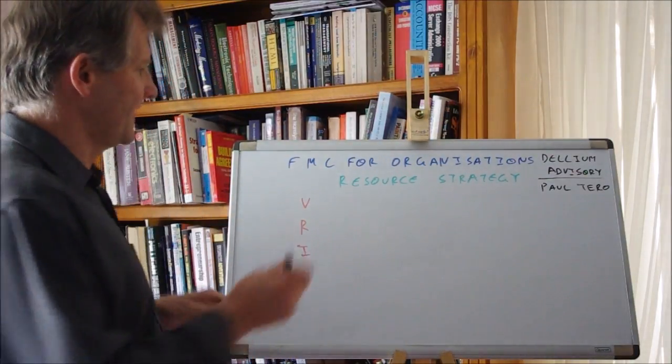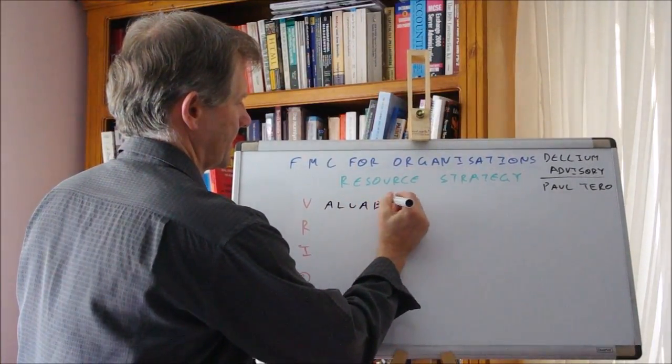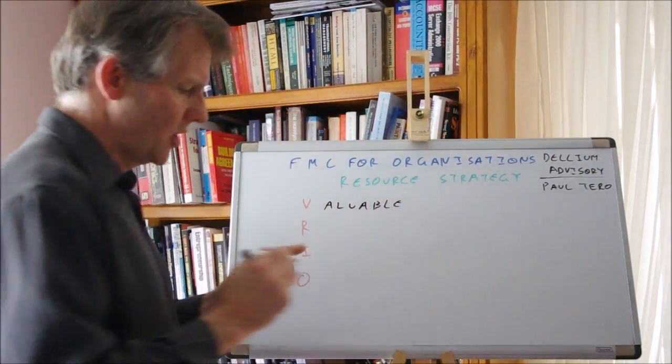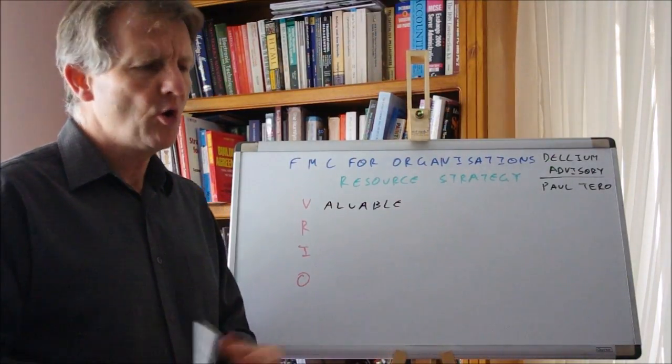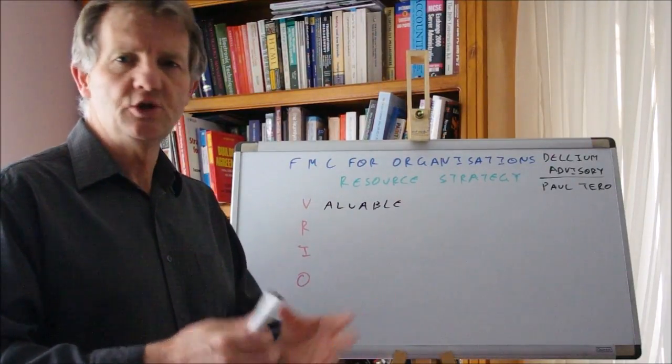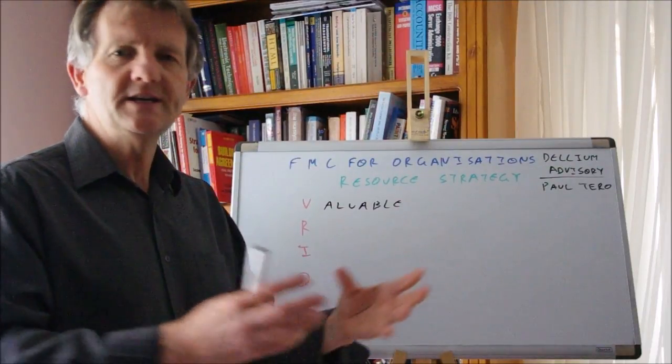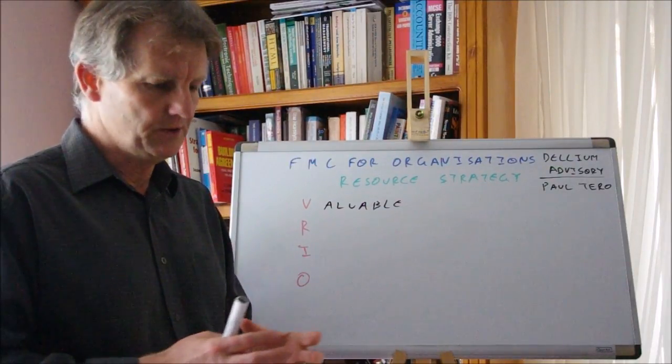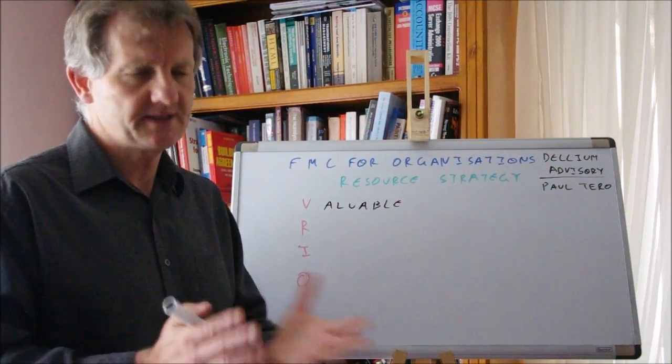V stands for valuable. What resource, what capability, what capacity do you have which is valuable, which enables you to compete either offensively or defensively? You need to have something of value within your organization to enable you to compete. That's the starting point.